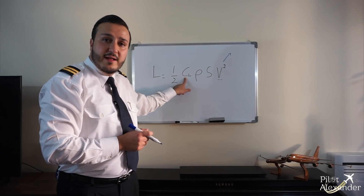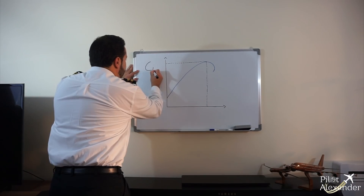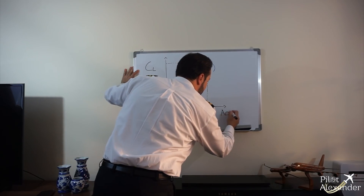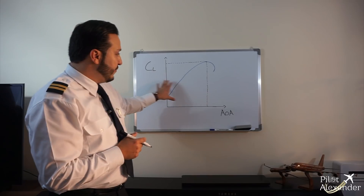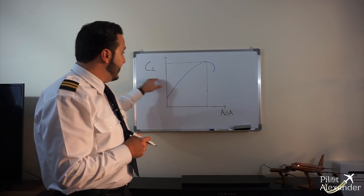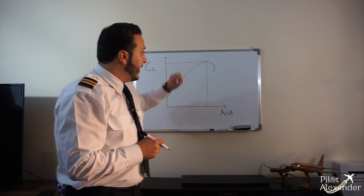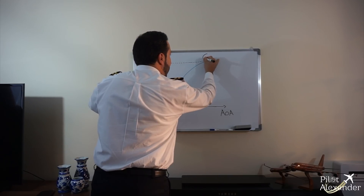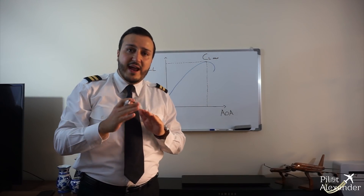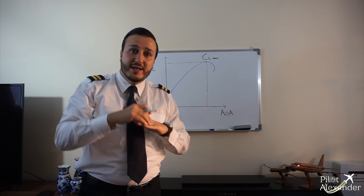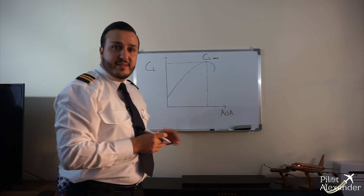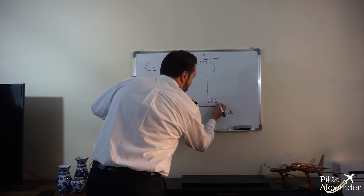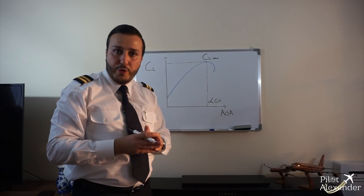Let's take a look at the lift coefficient as a function of the angle of attack. The angle of attack, or AoA, is the angle formed between the chord of the aerofoil and the relative wind vector. What the graph tells us is that as the angle of attack increases, the lift coefficient increases as well, until a certain point where it starts to decrease again. This point is called CL max. At this point, the airflow on the upper side of the wing detaches from the wing itself — this is called a stall. The angle of attack at CL max is called alpha critical, or the critical angle of attack.